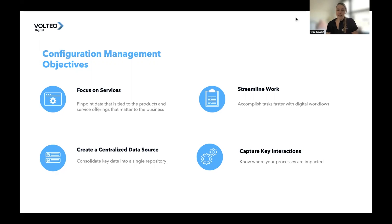CMDB implementation should happen in phases, starting at the base foundation layer and then moving to a crawl approach, a walk, and eventually a run and fly approach when you hit that maturity. Another objective is to streamline work using workflows within the CMDB applications to create automation. One example is using the identification reconciliation engine, or IRE, to automate identifying CI classes and avoid duplicate CIs. The IRE looks at all new ingested CI data and compares it to existing data based on unique identifiers, and either creates a new CI or updates an existing one.